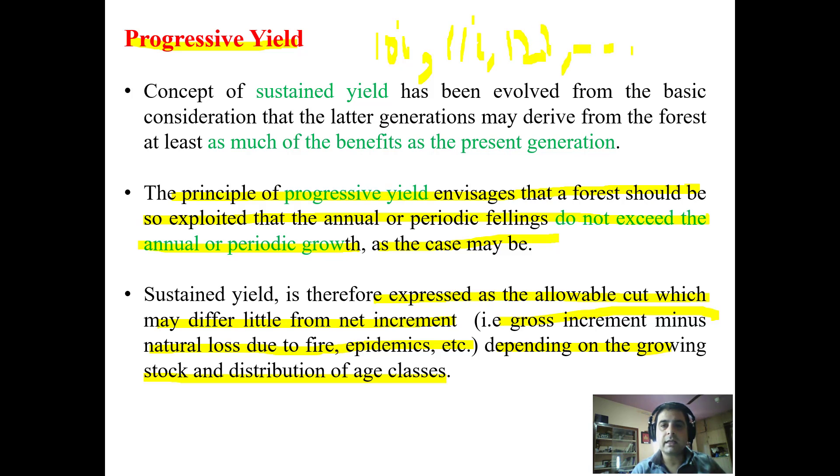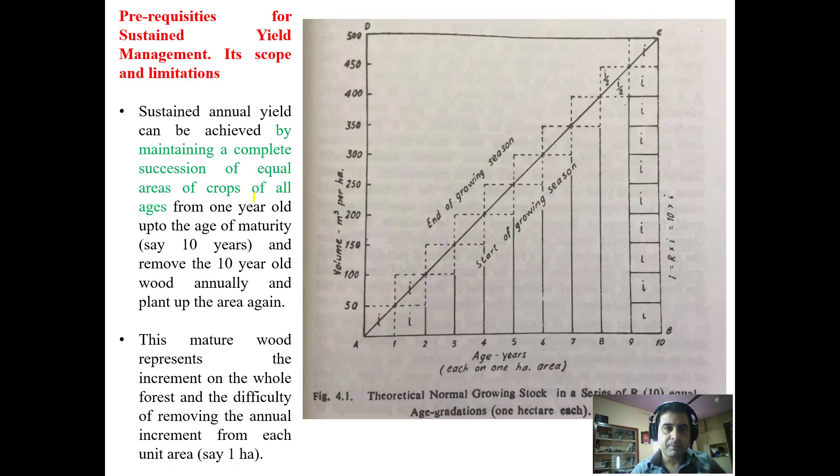Prerequisites for sustained yield: its scope and limitations. Sustained yield can be achieved by maintaining a complete succession of equal areas of crops of all ages.